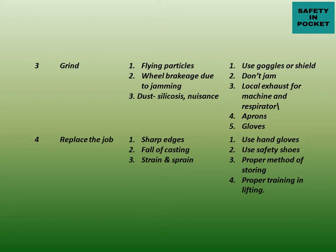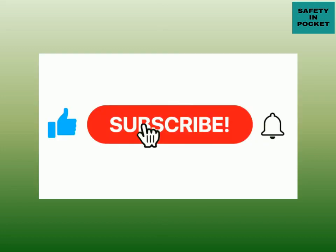The third step is 'Grinding.' Hazards include: flying particles, wheel breakage due to jamming, dust causing silicosis and nuisance. Precautions: use goggles or face shield, don't jam the wheel, use local exhaust for the machine, and use respirator, aprons, and gloves. The fourth step is 'Replace the Job.' Hazards: surface conditions, fall of casting, and strain. Precautions: use hand gloves, safety shoes, proper method of storing, and proper training in lifting.